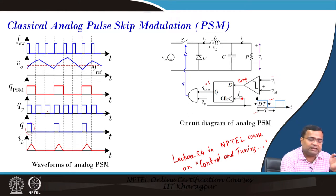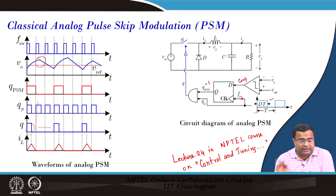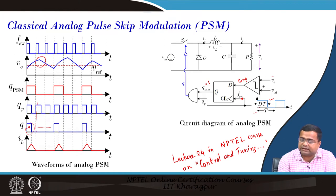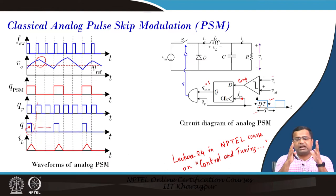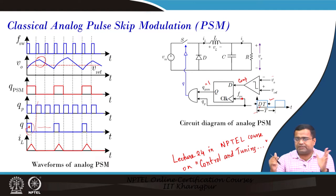Once the voltage goes above V_ref, it will skip the pulse. You can see this cycle voltage is higher, so this cycle is skipped. Two subsequent cycles are skipped. During the charge pulse, we are taking a fixed duty ratio that is reflected in the control. So during charge pulse it is like PWM control with a fixed duty ratio, and during other time if the output voltage is higher than V_ref, it will simply skip the cycle.